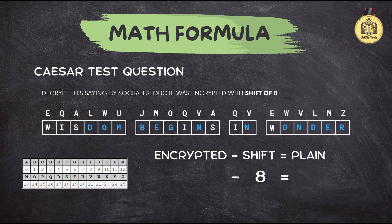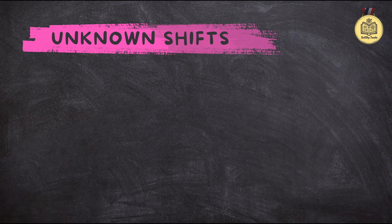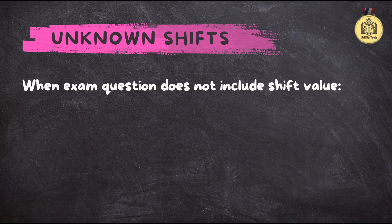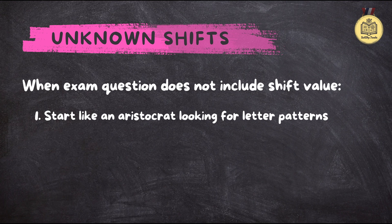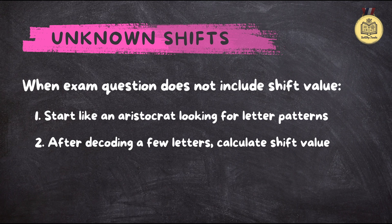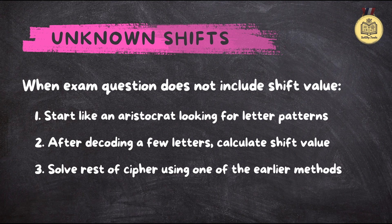Both the mapping table and the formula work really well, but what happens when we don't know the shift? If we get a message and we're totally in the dark, it gets a little trickier but way more exciting. It's all about patterns — look for common letter combinations, short words, anything that stands out. Single-letter words are usually A or I in English. Once you've cracked a few letters, you can figure out what the shift must be, then use either method to decode the rest.